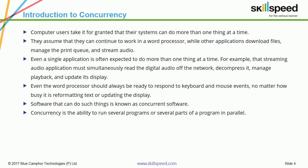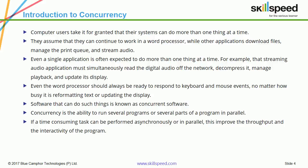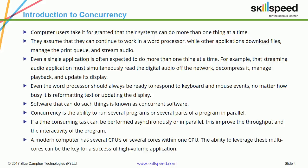For example, a streaming audio application must simultaneously read the digital audio from the network, decompress it, manage playback, and update its display. Even the word processor should always be ready to respond to keyboard and mouse events no matter how busy it is reformatting text or updating the display. Software that can do such things is known as concurrent software. Concurrency is the ability to run several programs or several parts of a program in parallel. If a time-consuming task can be performed asynchronously or in parallel, this improves the throughput and the interactivity of the program.